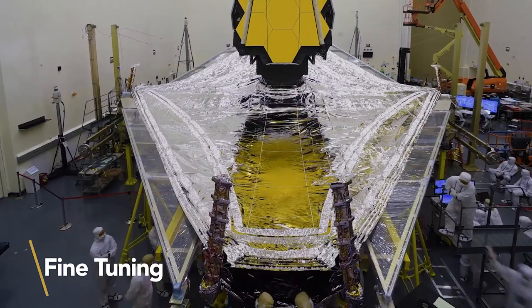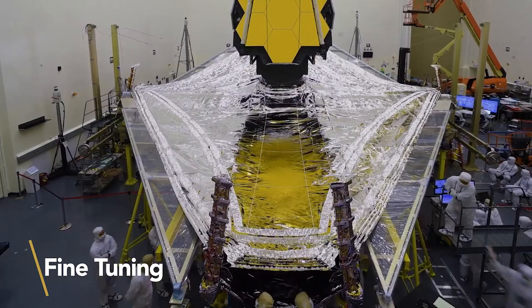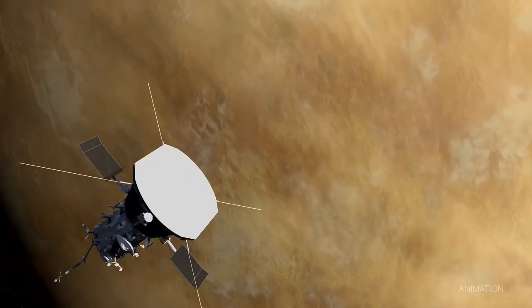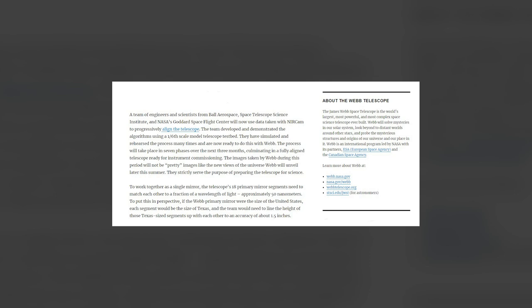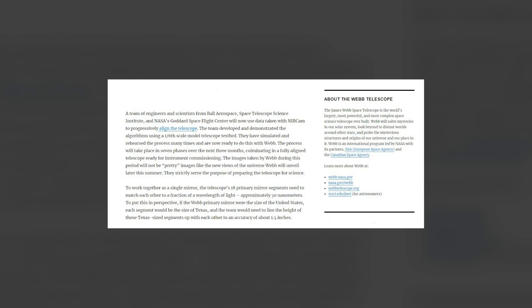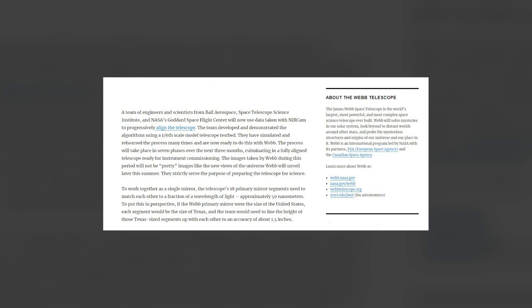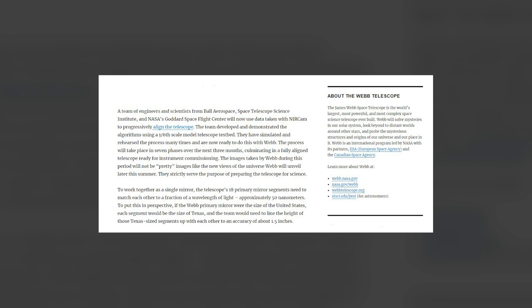So what is going to happen now to ensure that the James Webb telescope works in a way that is usable? NASA went into detail about that as well. A team of engineers and scientists from Ball Aerospace, Space Telescope Science Institute, and NASA's Goddard Space Flight Center will now use data taken with NIRCam to progressively align the telescope. The team developed and demonstrated the algorithm using a 1/6th scale model telescope testbed. They have simulated and rehearsed the process many times and are now ready to do this with Webb.